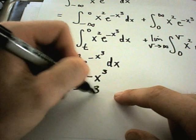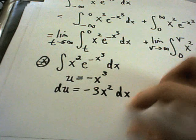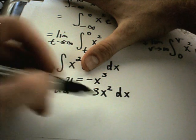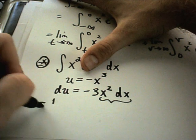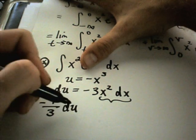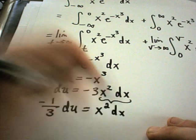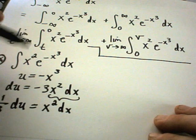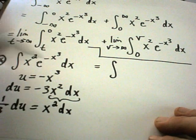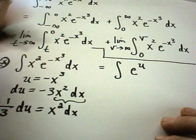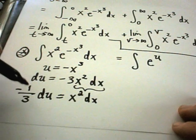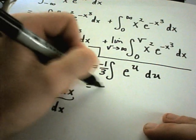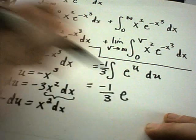So du I'll get negative 3x squared dx. Well in my problem, I'm gonna call the x cubed u, and then I'm left with an x squared dx. I want to get just x squared dx alone here, so I'll divide by negative 3, and I'll have negative 1/3 du equals x squared dx. So kind of forgetting about this part for a second here, when I do my anti-derivative I'll get e to the u, and then the x squared dx is going to be replaced with the negative 1/3 du.